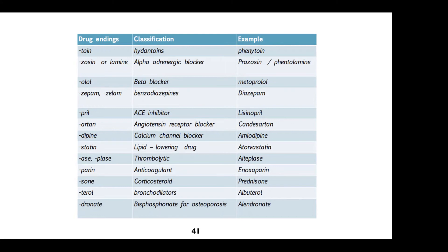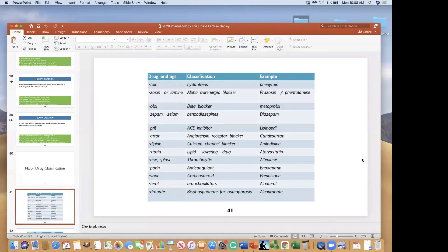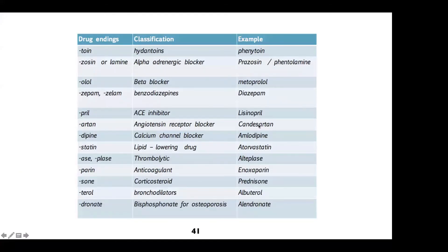Anytime you see a drug that ends in ASE or PLASE, maybe indicating that it's a thrombolytic. So think of it as a drug used to dissolve clots, clot busters. Anytime the drug ends in O-N-E, and you could also add to that I-D-E. So I-D-E or O-N-E are your steroids. Drugs like prednisone, budesonide, drugs for inflammation.